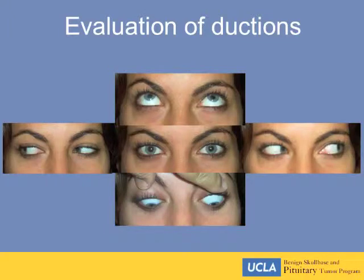Ductions are the range of movement of the eye. You don't have to evaluate them quantitatively or photographically, but it's good to ask your patient to look up, down, left, and right, and subjectively assess whether the movement of the eye is full. If there is some limitation, record that in your note.